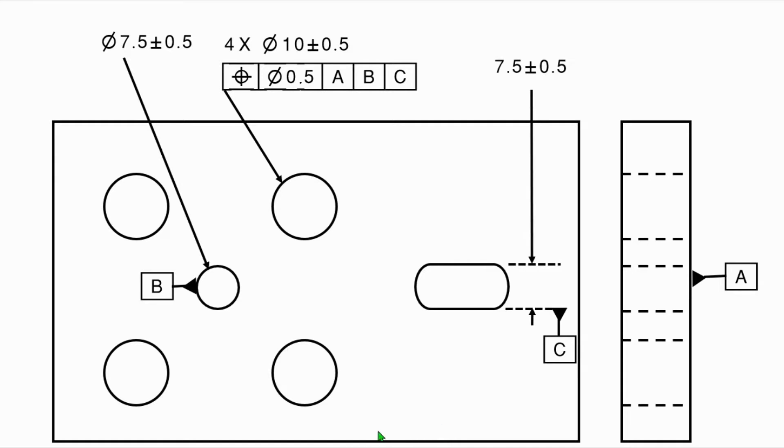So here we have a part. We have a datum A plane, we have a datum B hole, and a datum C slot. And we have a call-out of a pattern of four holes here back to A, B, C.